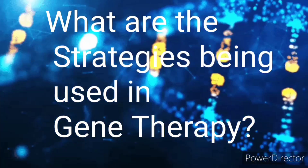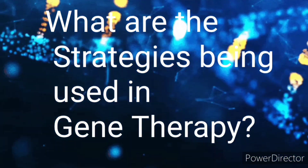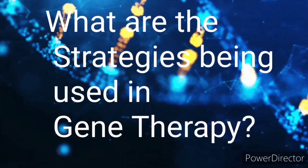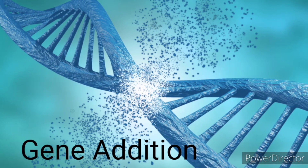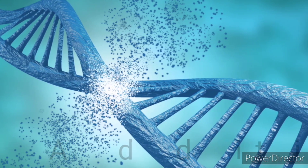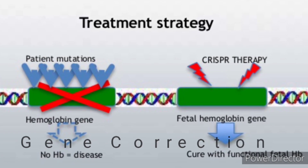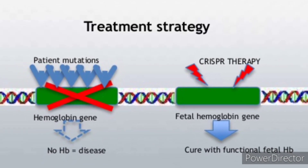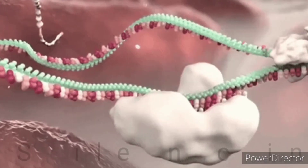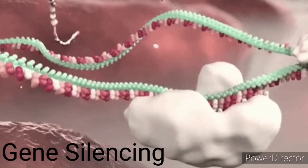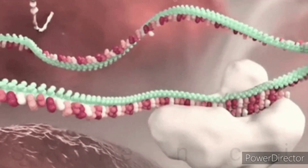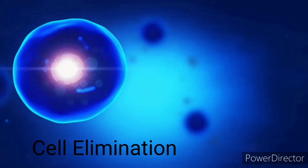Next, what are some possible strategies being used in gene therapy? There are a number of strategies mainly used in somatic cells. First, gene addition — this is where we add functional copies of a gene to address the underlying genetic cause. Second, gene correction — it gives us tools for both repairing and mutating DNA, for discovering gene functions, and for engineering new genetic variants. Third, gene silencing — the interruption or suppression of gene expression at transcriptional or translational levels. Fourth is reprogramming, and fifth is cell elimination.